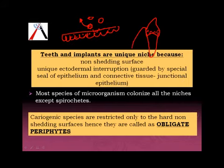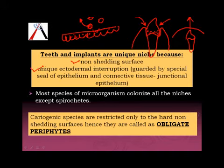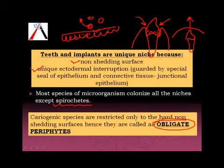Teeth and implants cause a natural breach in the epithelium. Normally the intact epithelium is broken down by the teeth, and this breach makes these areas more susceptible to bacterial attack. These are the two unique features of teeth and implants: they have non-shedding surfaces and they have unique ectodermal interruptions. Most species of organisms colonize all five niches except spirochetes. There are some cariogenic species restricted only to hard tissue, called obligate periphytes.